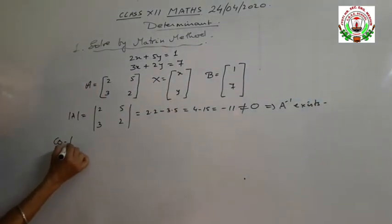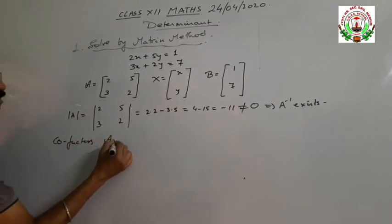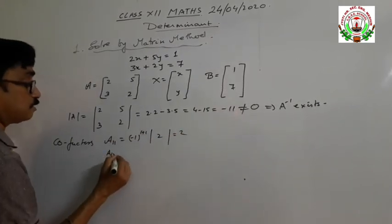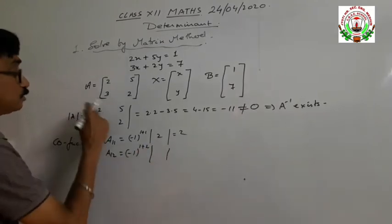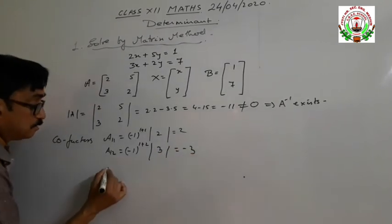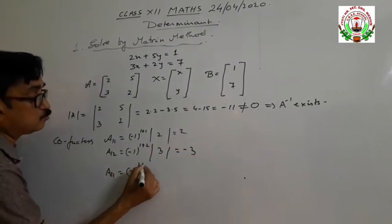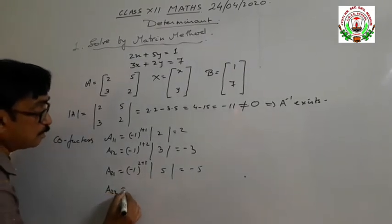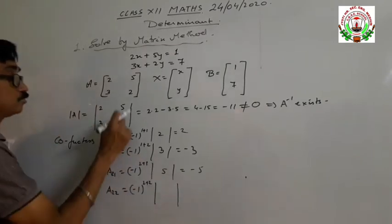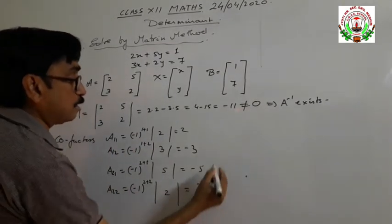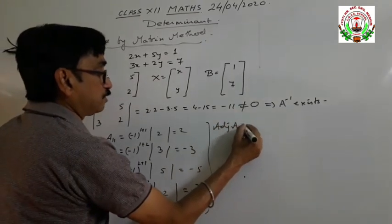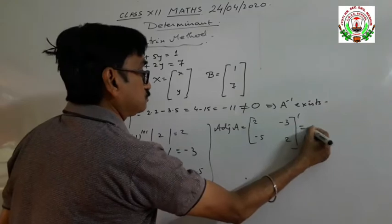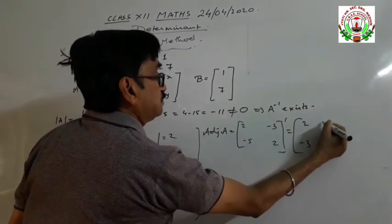Now the cofactors: A11 equals minus 1 to the power 1 plus 1, first row first column, which gives 2. A12 equals minus 1 to the power 1 plus 2, first row second column, which gives minus 3. A21 equals minus 1 to the power 2 plus 1, second row first column, which gives minus 5. A22 equals minus 1 to the power 2 plus 2, second row second column, which gives 2. The adjoint of A is the transpose of the cofactor matrix: 2, minus 3, minus 5, 2, and taking the transpose gives 2, minus 5, minus 3, 2.